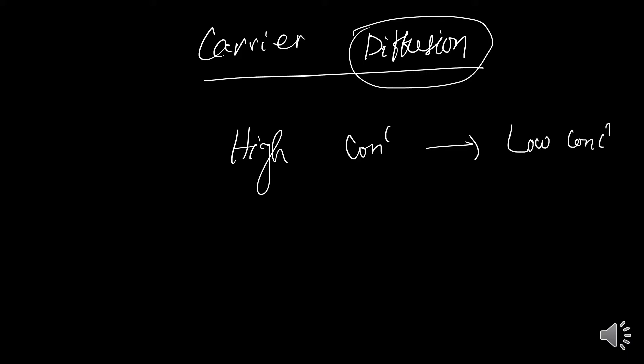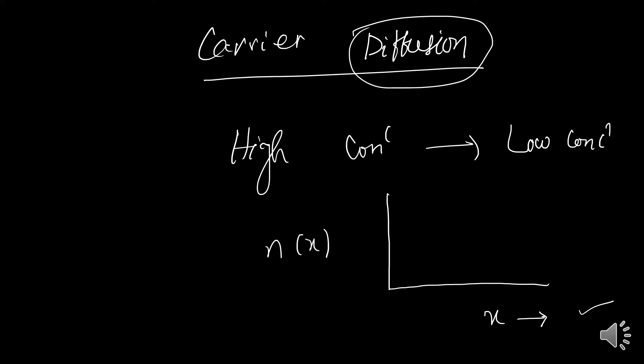When we are talking about the transport mechanism of electrons, there are two different ways: one is in terms of applied electric field and mobility, which we discussed, and now here we are talking about the concentration gradient. Concentration gradient means the value of concentration of electrons or holes at different points will be different. For example, considering one dimension, we can take a linear variation of electron concentration with respect to distance.